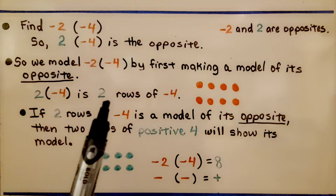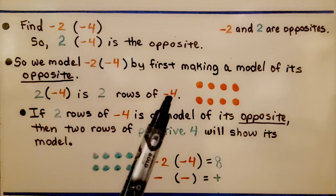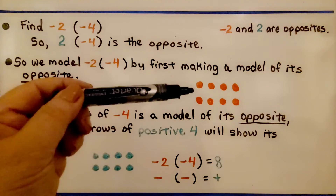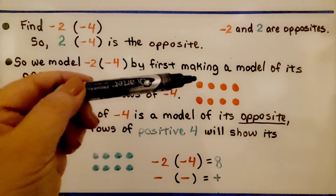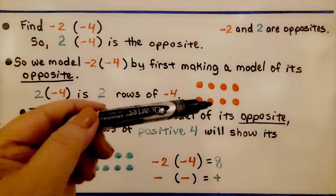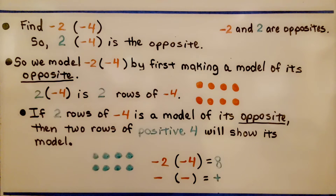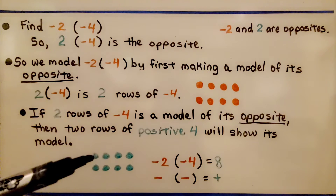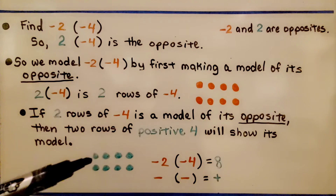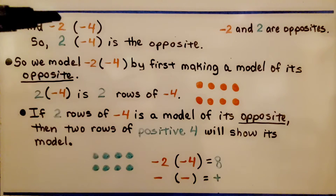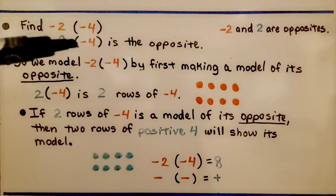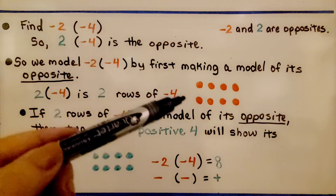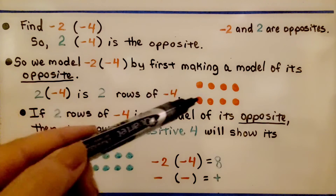Positive 2 times negative 4 is 2 rows of negative 4. We have 2 negative 4s — that's 4 negative counters and another 4 negative counters, making 2 rows of them. Then we make the same model using positive counters. We modeled this equation's opposite, positive 2 times negative 4, by making 8 negative counters.